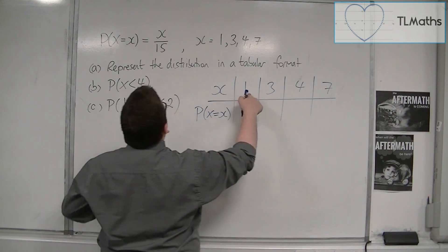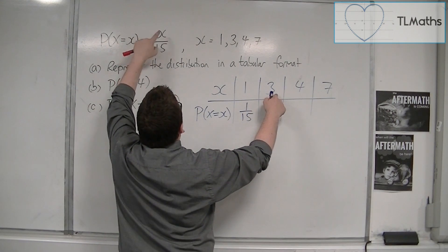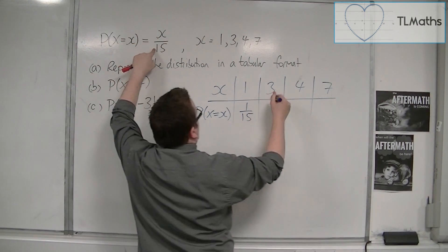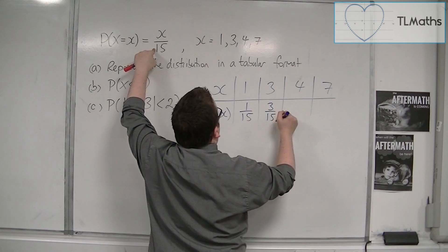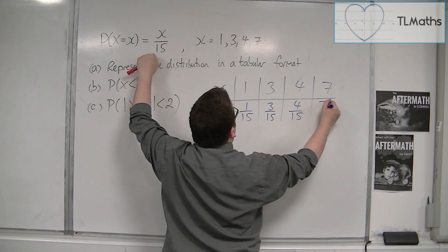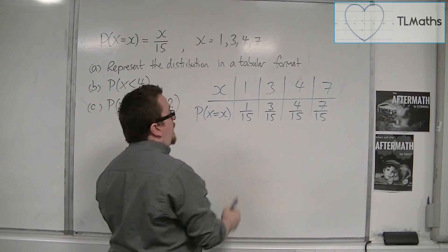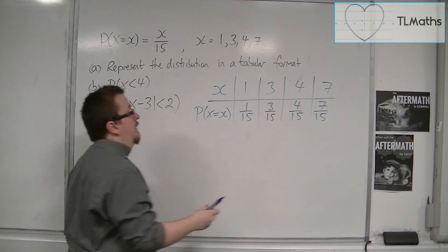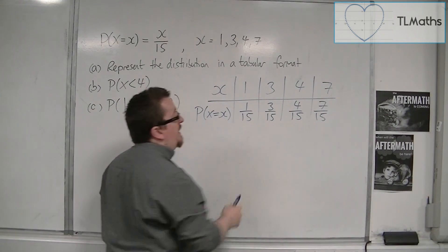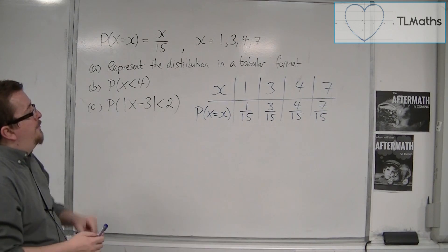So when x is 1, the probability is 1 over 15. When x is 3, the probability is 3 over 15. When x is 4, the probability is 4 over 15, and then we'll have 7 over 15. And these four probabilities should add up to 1. So 7, 11, 14, 15 over 15. So that's the tabular format.